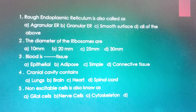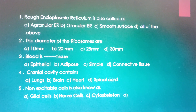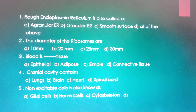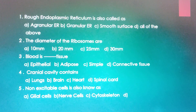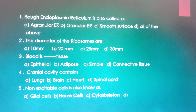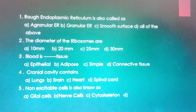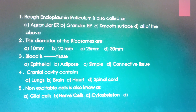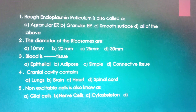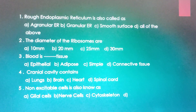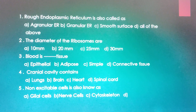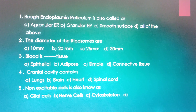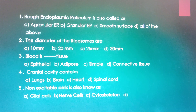The second question: the diameter of the ribosomes is 10 mm, 20 mm, 25 mm, or 30 mm. The correct answer is 20 mm.